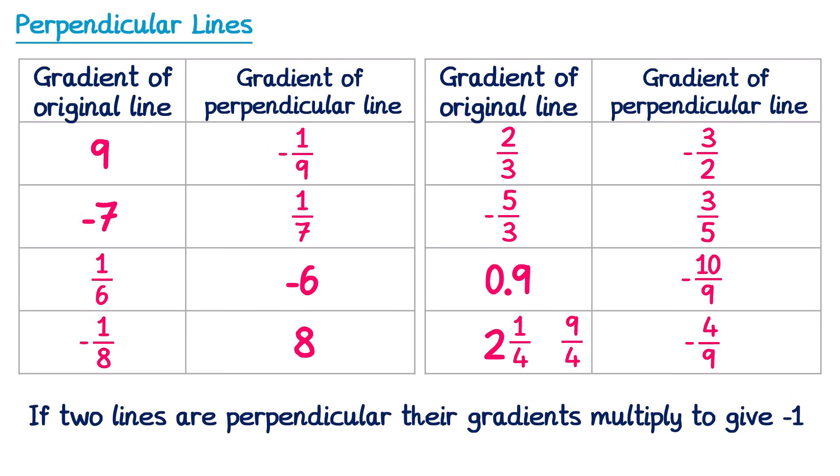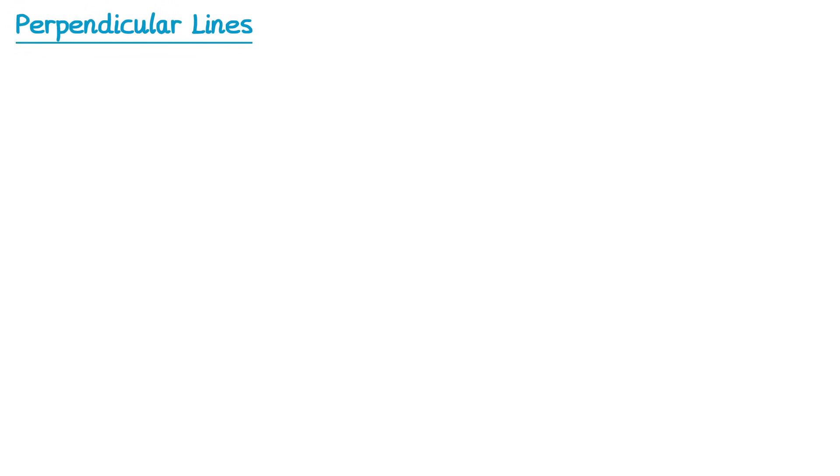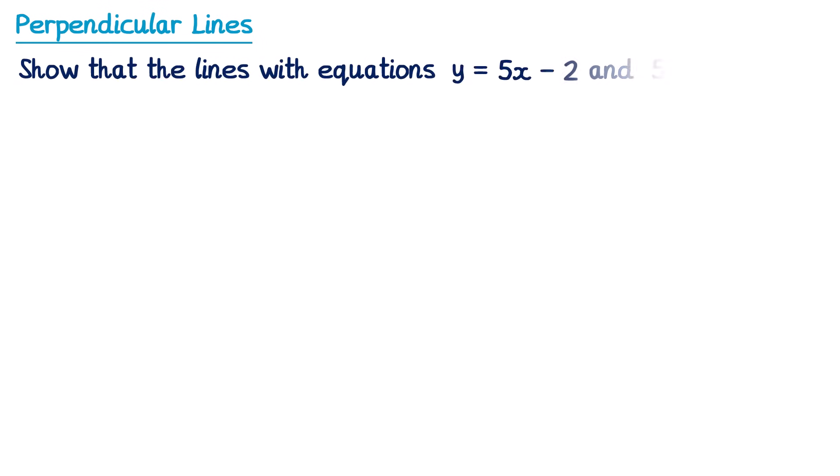So this is how you find the gradient of a perpendicular line if you know the gradient of the original line. Now we're going to have a look at some questions that use this idea. The first thing you could be asked to do in your exam is, given two lines, show that they're perpendicular. We know that if they're going to be perpendicular, their gradients must multiply to give negative 1 — and if they don't, they're not perpendicular.